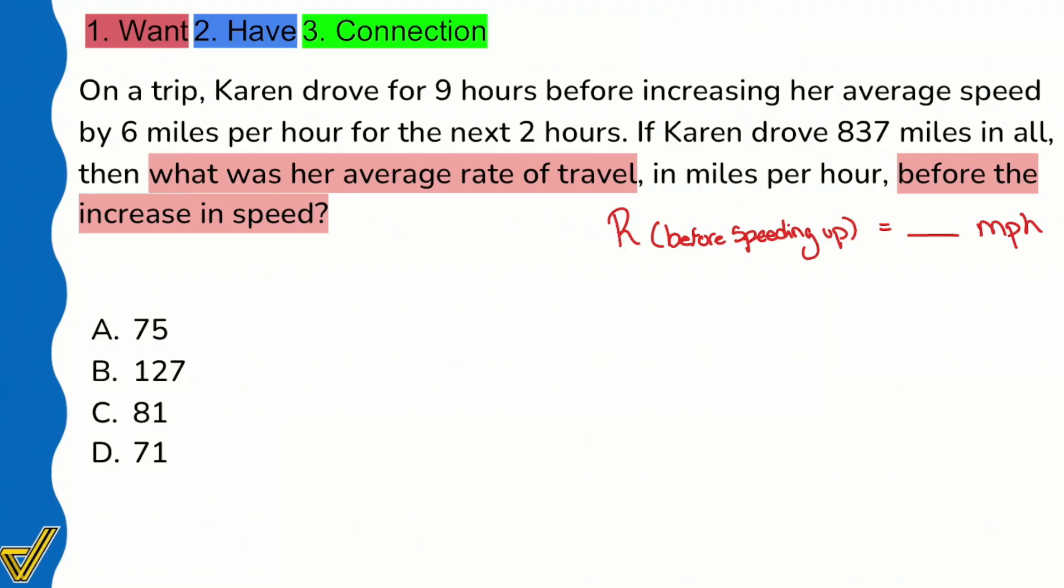Now let's take a look at the surrounding information beginning with the same sentence. Karen drove 837 miles in all. In all basically just means total. Let's go ahead and highlight that and write it down: total distance equals 837 miles.